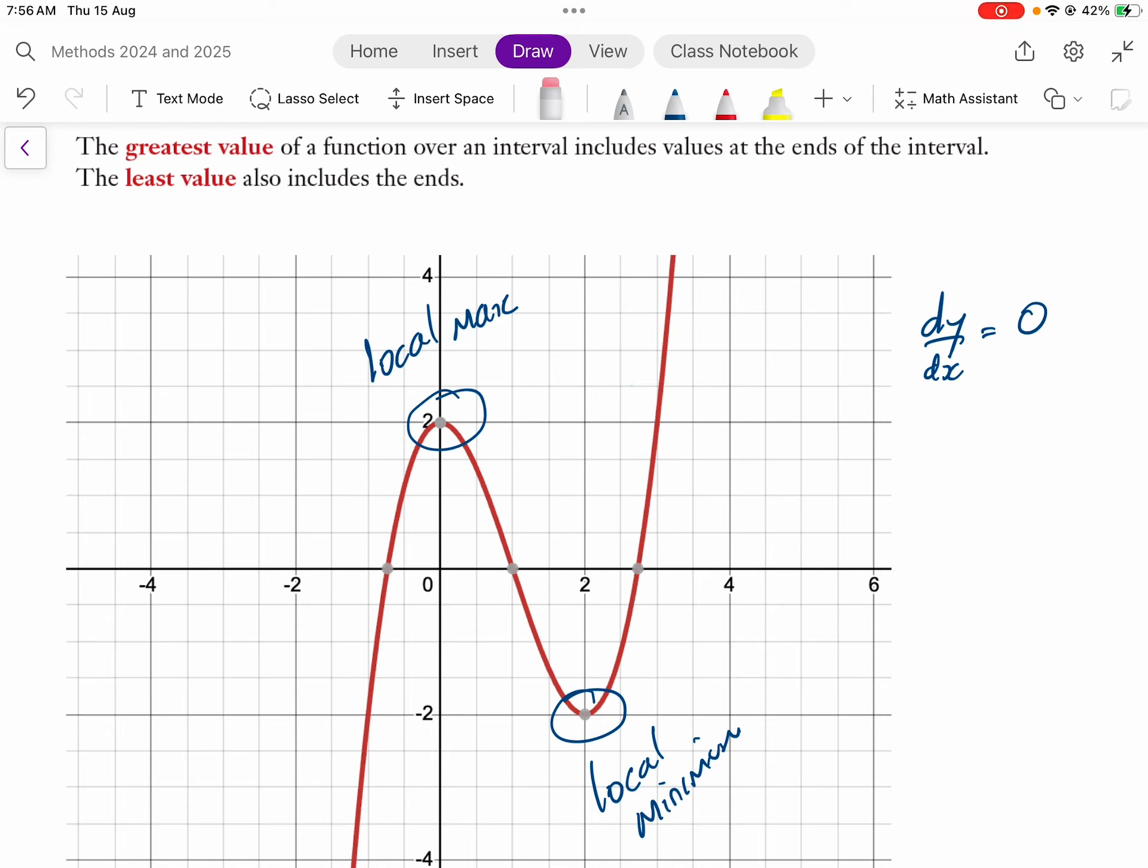if our domain is much bigger, say out here or out here, we can see that the graph would be much higher up here or much lower down here than our local max and minimum, which we call our global maximum. So we would need to look at the endpoints of our domain to see if they're higher or lower